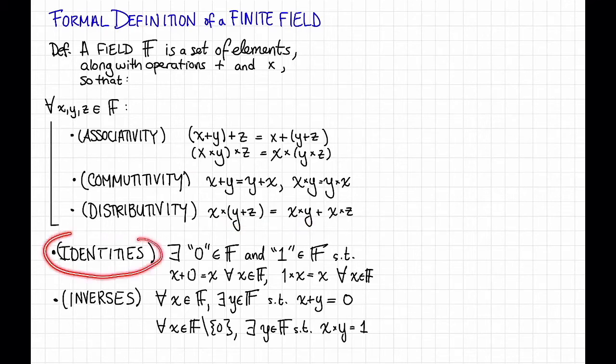The next one is the existence of identity. There should be an additive identity that we're going to call 0, and a multiplicative identity that we're going to call 1, so that for any x, x plus 0 is equal to itself, and x times 1 is equal to itself.